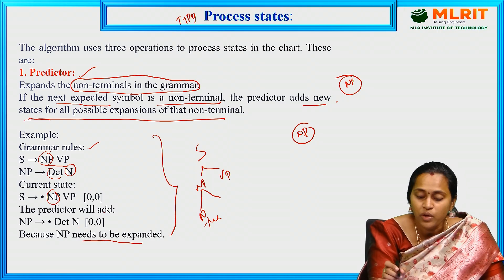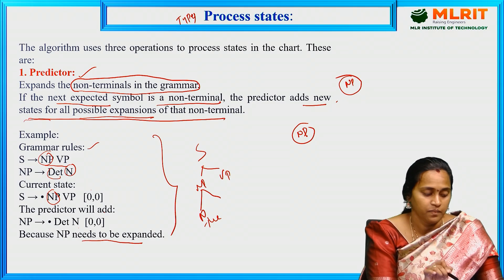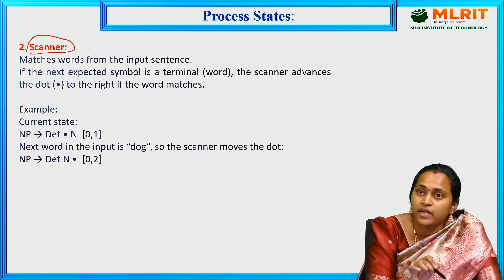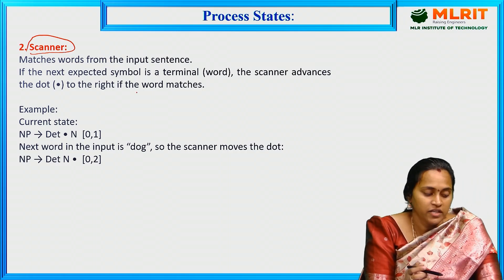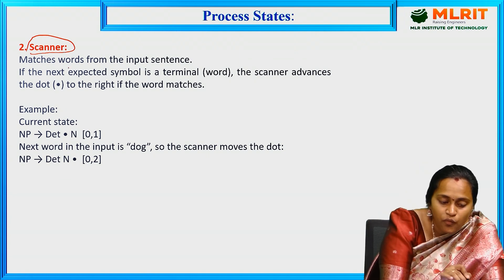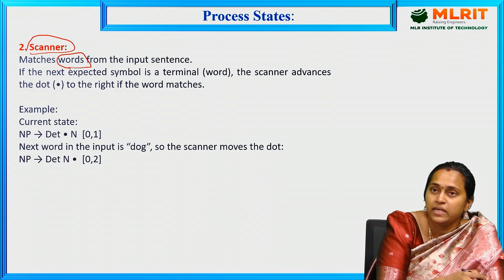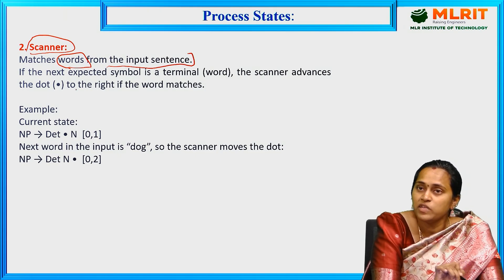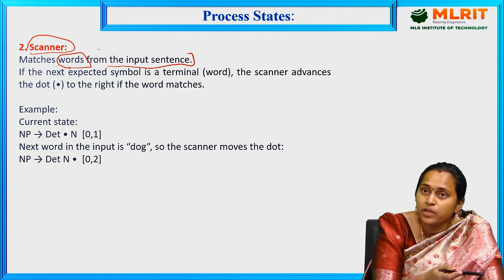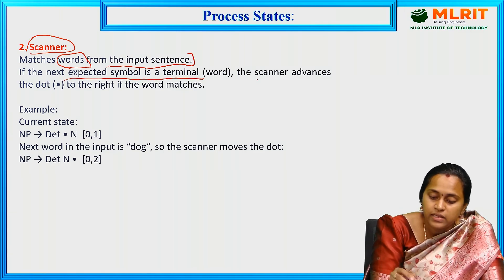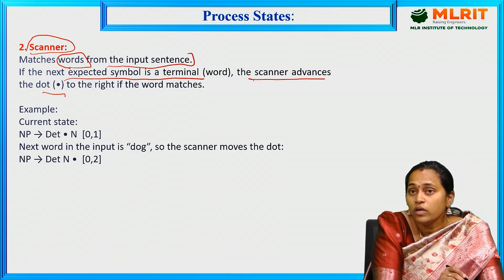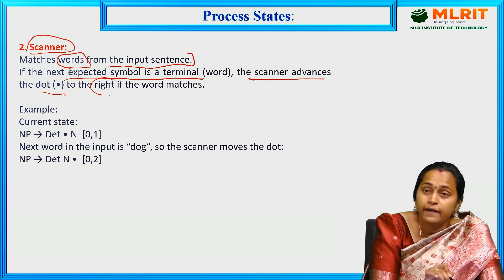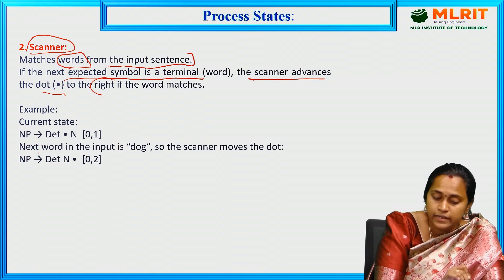The second process state is the Scanner. The Predictor expands possible non-terminal symbols, but the Scanner matches words from the input sentence. This is the main difference between Predictor and Scanner. If the match is found, it advances to the next value. If the next expected symbol is a terminal, the Scanner advances the dot to the right side when the word matches.